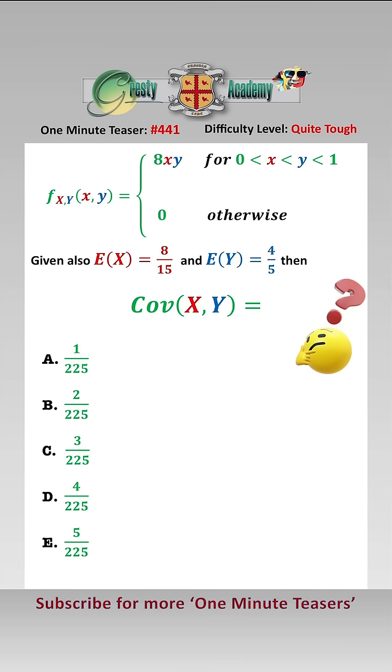We should use the formula that covariance of X and Y equals the expected value of XY minus the expected value of X times the expected value of Y. Now we know the expected value of X and expected value of Y, we could have worked them out using the marginal probability density functions of X and Y.